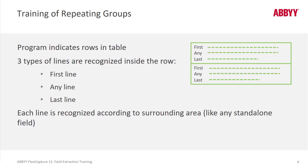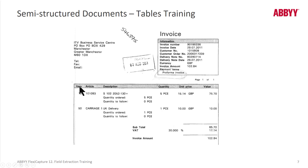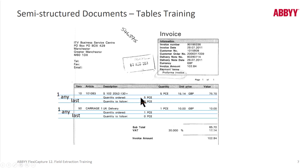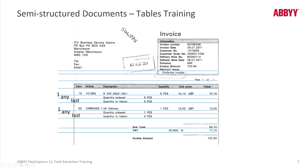We can train repeatable groups as well, where the software first targets a first line, then a last line, and those lines between the first and last are considered any lines. So it considers this first line, then this last line, and anything in between can be any line.